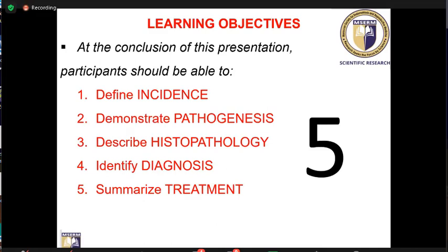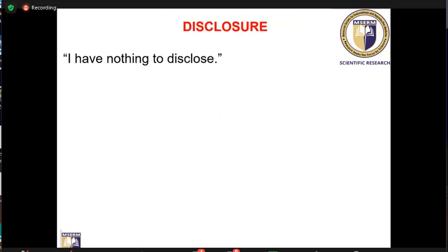The five items are: definition and incidence, demonstrating pathogenesis, describing histopathology, identifying diagnosis, and summarizing treatment.